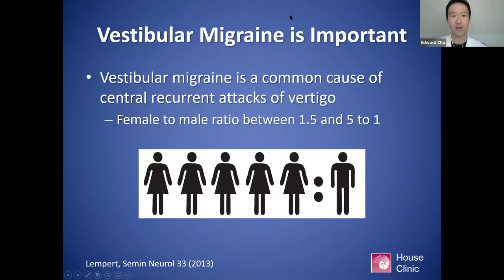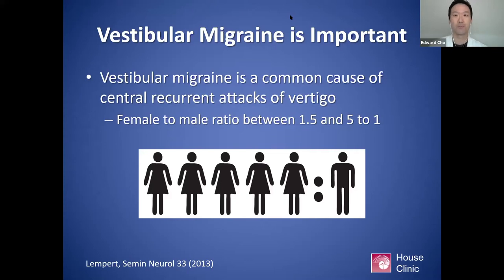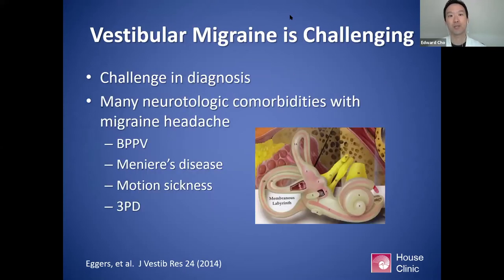I wanted to start off to underscore the importance of vestibular migraine. It's actually the most common cause of central recurrent attacks of vertigo, only secondary to BPPV in terms of commonality of triggering vertigo. The female to male ratio is estimated as high as five to one, thought to be secondary to a hormonal component in migraine symptoms. It can also be a very challenging diagnosis.